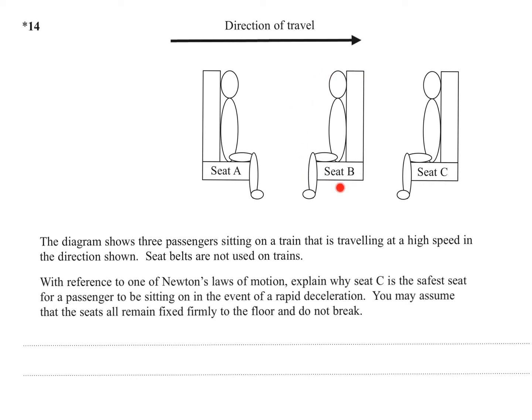So while passenger B is safe, they may be hit by passenger A. Passenger C here is the only one who doesn't have someone sitting in front of them, so they're in the safest seat.